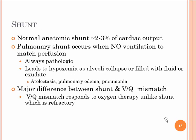A shunt. Normal anatomic shunt is about two to three percent of cardiac output. A pulmonary shunt occurs when there is no ventilation to match perfusion, and this is always caused by disease. It will lead to hypoxemia as alveoli collapse or fill with fluid, such as with atelectasis, pulmonary edema, or pneumonia. The major difference between VQ mismatch and shunt is that VQ mismatch responds pretty easily to oxygen therapy, whereas shunt does not — it is considered refractory.